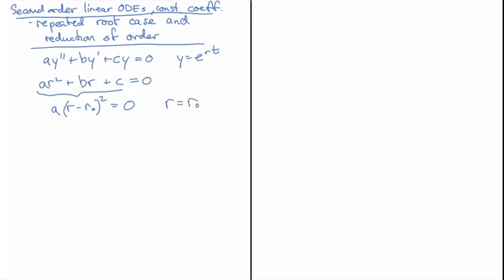What you quickly realize is that our ansatz only ends up with one case. So there's no general solution that we can write down when we just have a single root to the characteristic equation. We only get one of them.